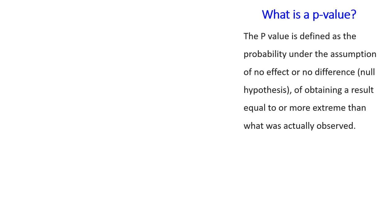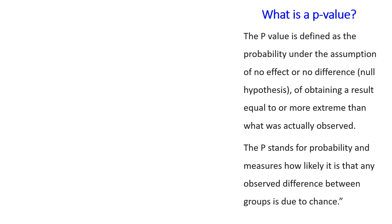What is the p-value? The p-value is defined as the probability, under the assumption of no effect or no difference (the null hypothesis), of obtaining a result equal to or more extreme than what was actually observed. The P stands for probability, and it measures how likely it is that any observed difference between groups is due to chance — or more simply, how likely it is that we say there is a difference when actually there is no difference. That probability is called the p-value.